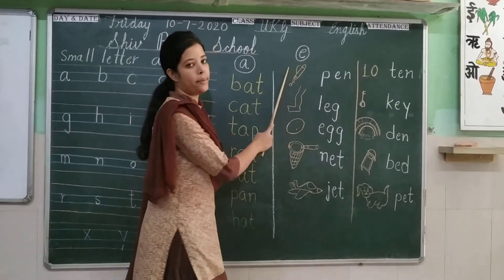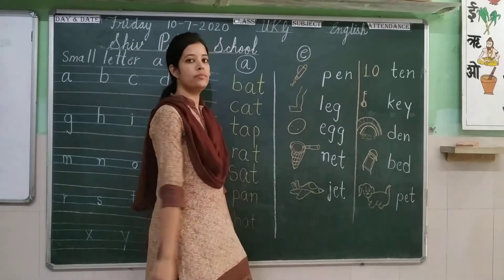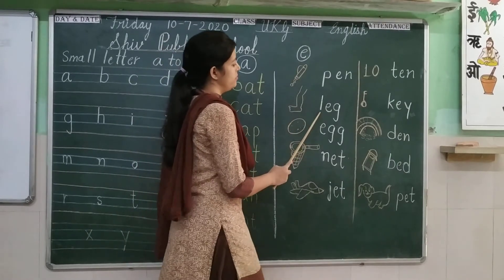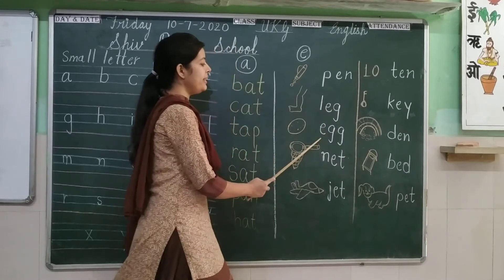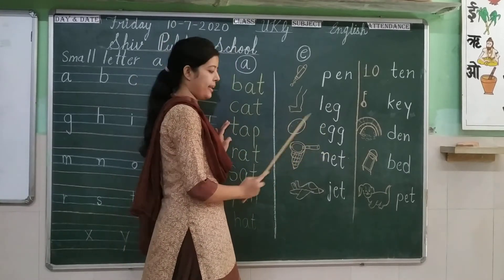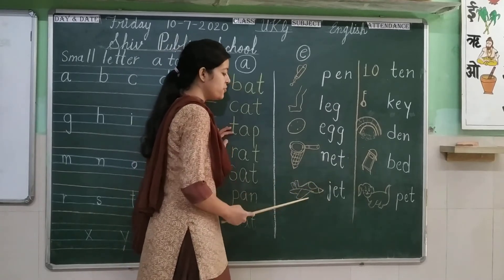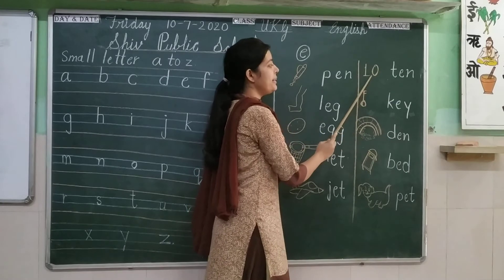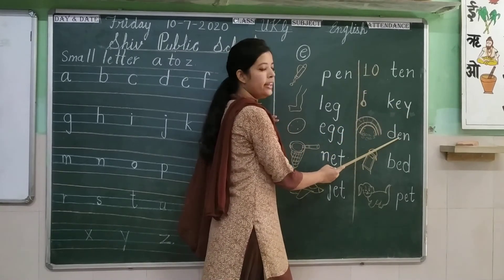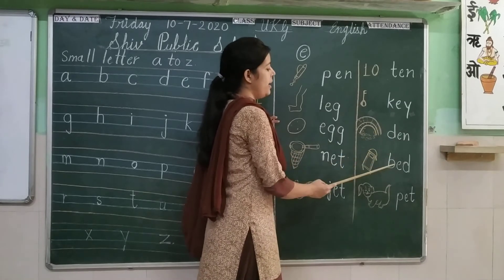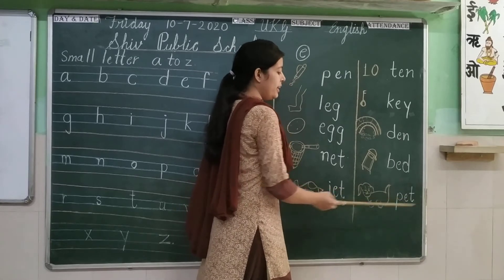Now we will talk about the sound of E. P-E-N, pen. L-E-G, leg. E-G-G, egg. N-E-T, net. J-E-T, jet. P-E-N, pen. K-E-Y, key. D-E-N, den. B-E-D, bed. P-E-T, pet.